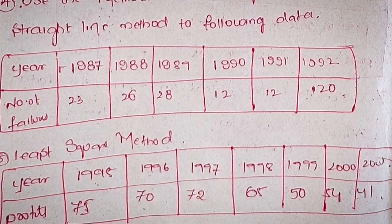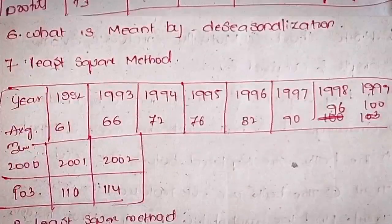Fifthly, least square method. Year: 1995, 1996, 1997, 1998, 1999, 2000, 2001. Profits: 75, 70, 72, 65, 50, 54, 41.